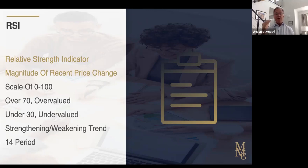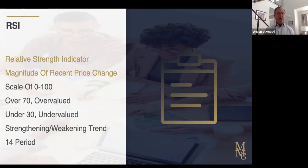Now, let me just say something. A stock can remain overpriced for weeks sometimes, but it's a really nice alert for us to look at and ask how much longer can this continue to run up? On the other hand, when we see a stock and the RSI is under 30, it is considered to be undervalued. In other words, it became out of favor and the selling was excessive.